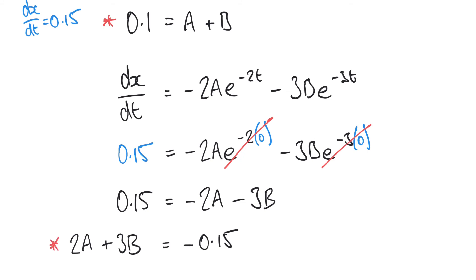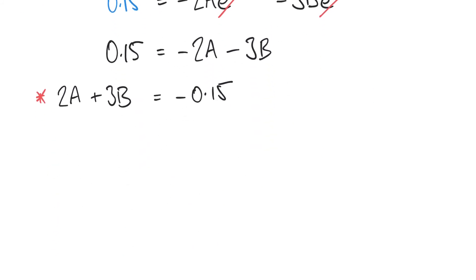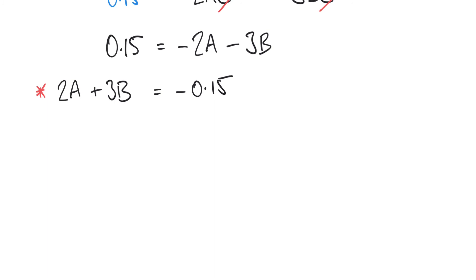So now we have two simultaneous equations in terms of A and B. Either of these equations on their own doesn't tell us what the value of A or B is, but together we can solve to find the values of A and B. We'll not go through the steps of solving, but you can do that yourself either by substitution or elimination or some other computational method.